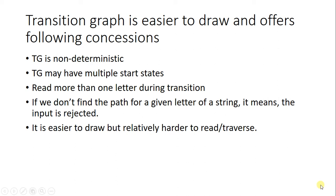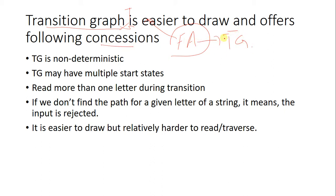Welcome back. Today we are going to discuss transition graphs. Finite state automata is also a transition graph, but finite automata is a strict form of transition graph. Transition graphs have certain concessions. The first concession is that a transition graph may be non-deterministic.